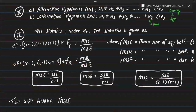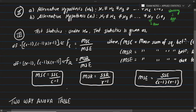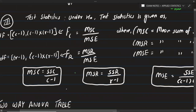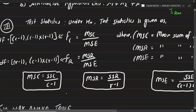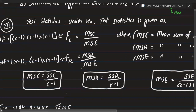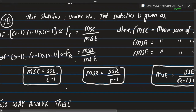We write the formula for the column and row. For columns, F_c is equal to MSC upon MSE. For rows, F_r is equal to MSR upon MSE. These are the two F ratio formulas used in two-way classification.